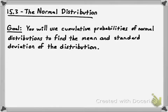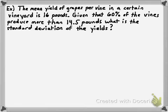Alright, welcome everybody. We're going to be finishing up in this video our discussion on section 15.3 about the normal distribution. In this video, what you're going to be doing is using cumulative probabilities of normal distributions in order to find the mean and standard deviation of the distribution. You'll see exactly what that means as we go through a couple of examples.